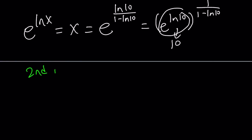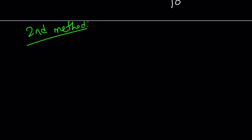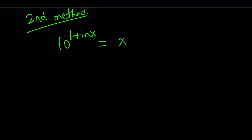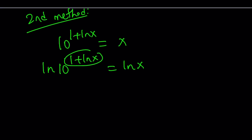For the second method, instead of logging both sides, I'm going to rewrite the original equation — 10 to the power 1 plus ln x equals x — and I'm going to ln both sides. That makes sense because we have ln x in the exponent. Let's go ahead and do it, and then like before, bring this down.